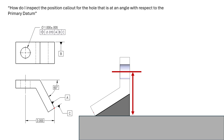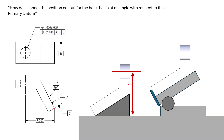Datum C also gives us a locational aspect. If datum feature C goes off at an angle, datum C is actually perpendicular to datum A, so datum C would give us our zero-zero-zero down here — not at the surface. So if that surface tips out, we need to inspect with that in mind and fully simulate datum C off of datum feature C. Something like a sine plate would help with that, and we could put a stop at the end of the part to simulate datum C being perpendicular to datum A.